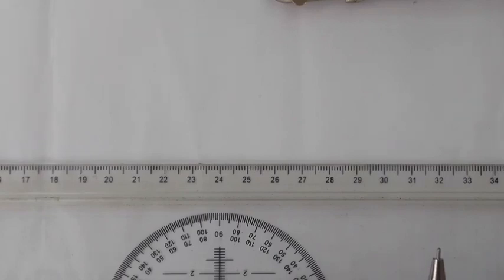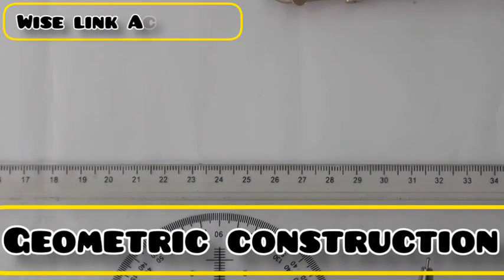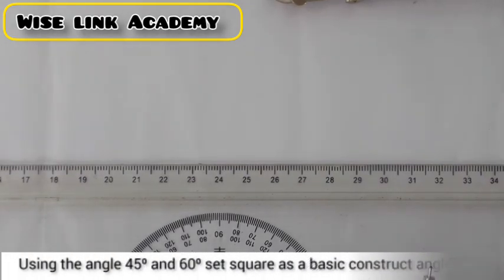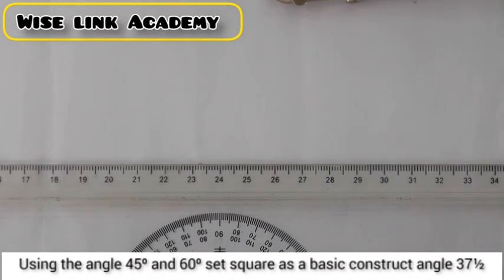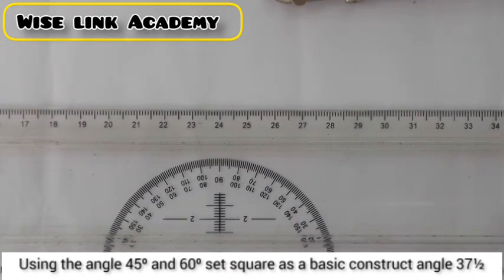Hello, welcome to today's class. We're going to be constructing angle 37.5 degrees, an aspect on geometric construction. The question goes: Using the angle of 45 and 60 set square as basic, construct angle 37.5 degrees.